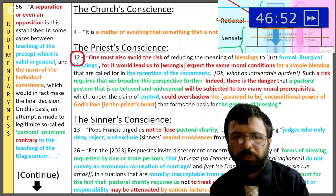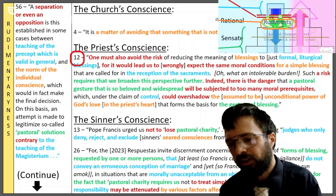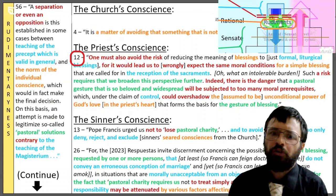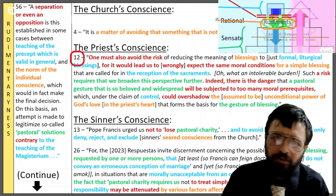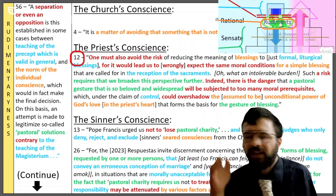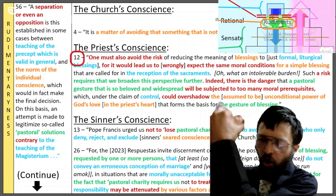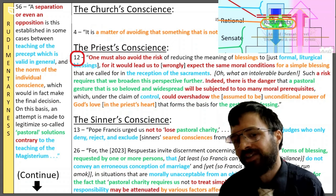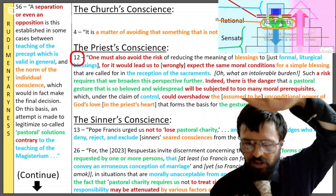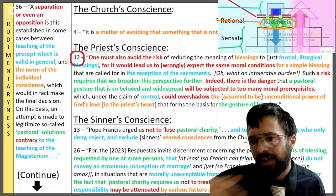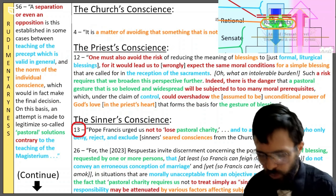Next, rudimentariness in the priest. Paragraph 12: 'One must also avoid the risk of reducing the meaning of blessings to just formal liturgical blessings, for that would lead us to wrongly accept the same moral conditions for a simple blessing that are called for in the reception of those sacraments.' Such a risk requires that we broaden this perspective further. 'Indeed, there's a danger that a pastoral gesture that's so beloved and widespread will be subjected to too many moral prerequisites which, under the claim of control, could overshadow the unconditional power of God's love that forms the basis for this gesture of blessing.' So here they're separating sacraments and liturgical rubrics from just gestures of blessing — the priest shouldn't have to apply standards; he should just go out and bless.